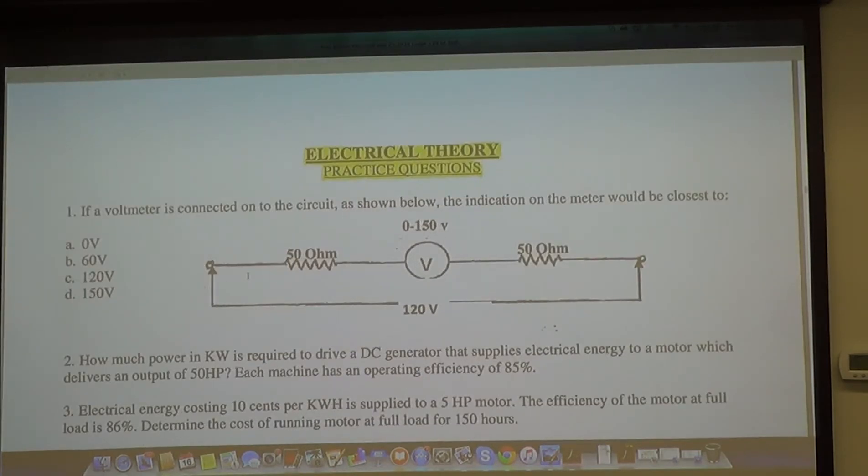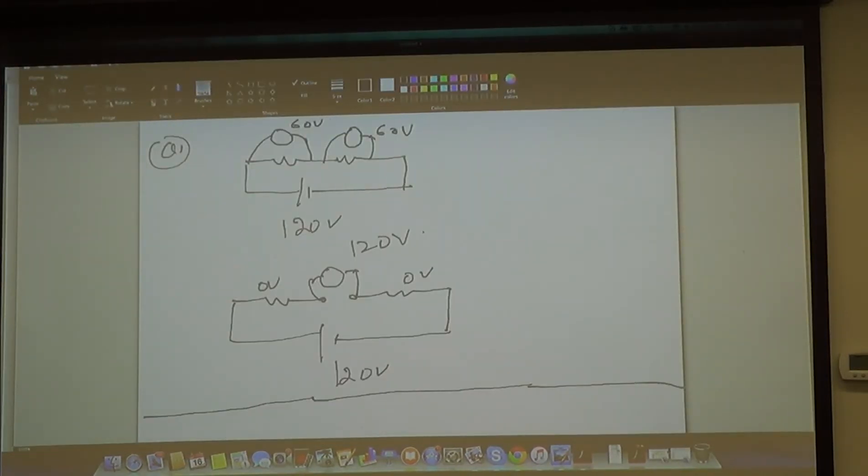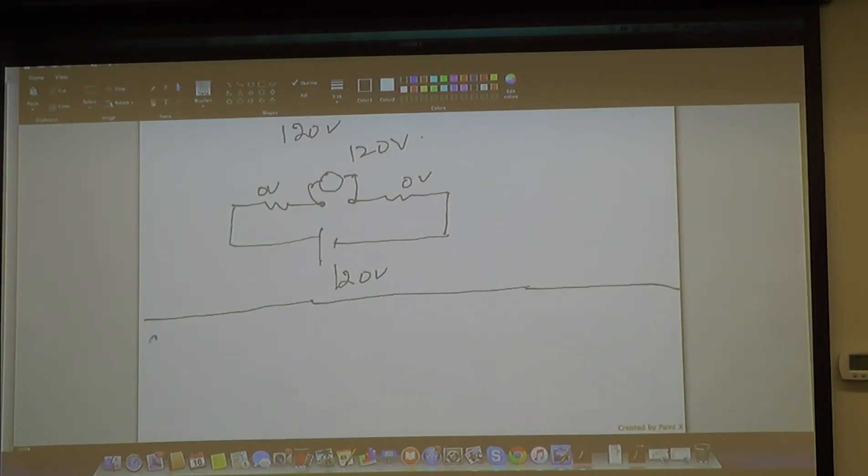Next question after that is question number two. I'm going to ask this question from Dan. Are you going to help me do question two, or did you do it at all? I didn't do it at all. Read that question out loud for me. How much power is required to drive a DC generator that supplies energy to a motor which delivers 50 horsepower? So, how much power is given to a DC generator that's driving a motor and motor is 50 HP?